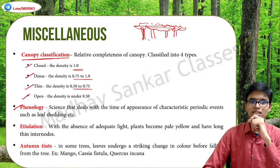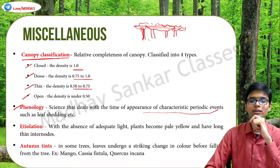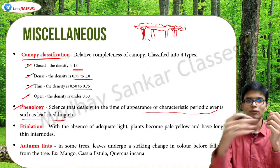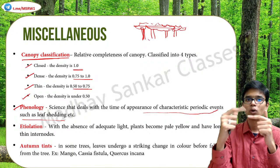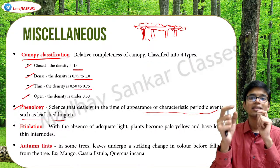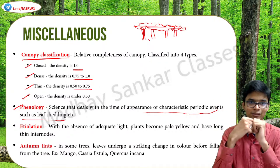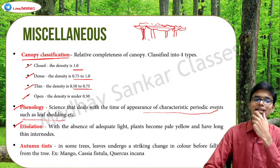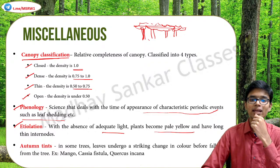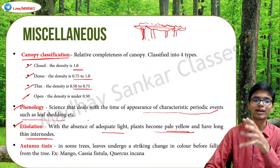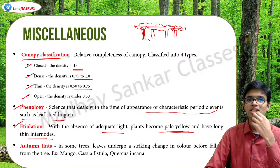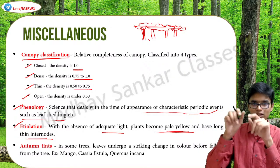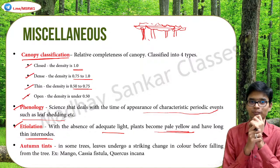Phenology is the science that deals with the time of appearance of characteristic periodic events such as leaf shedding - during a year certain characteristics become evident only during certain seasons. Etiolation is a condition where, with the absence of adequate light, plants become pale yellow and have long thin internodes. This is also seen in dense canopy regions - because of the lack of sunlight, the leaves start losing their green color and become pale yellow with long internodes.